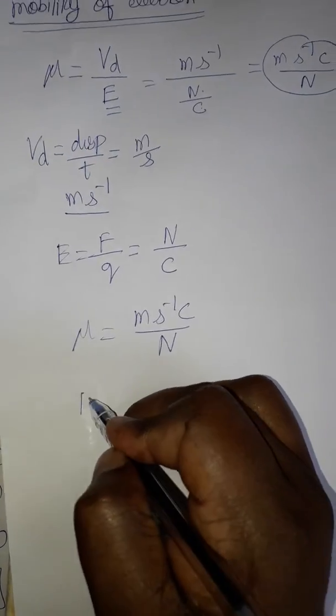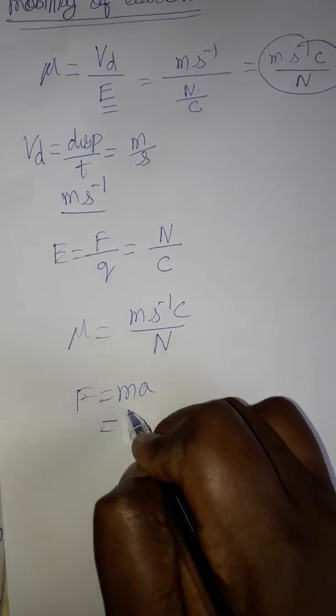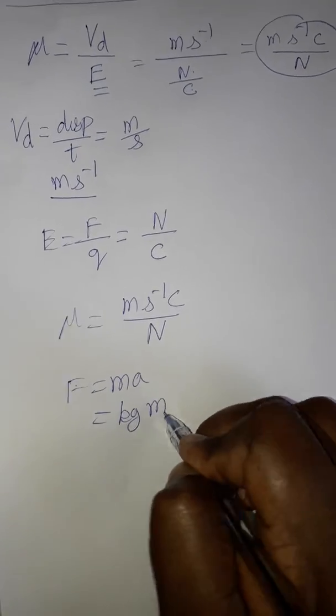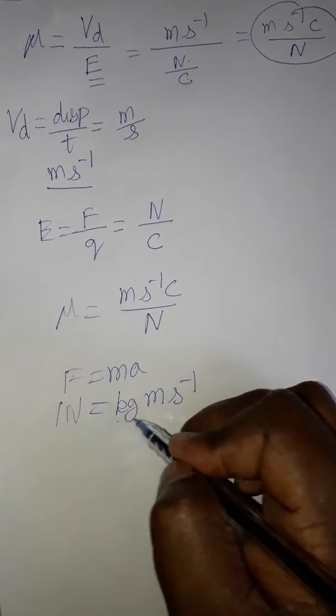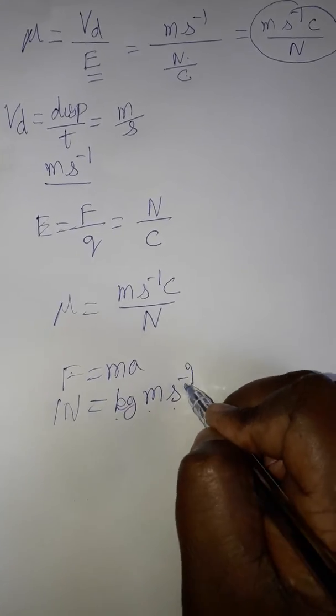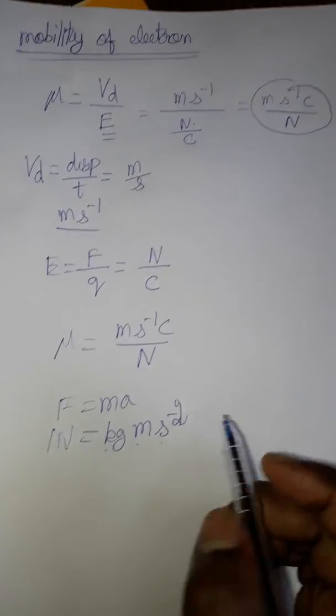One Newton: F is equal to mass into acceleration, kg meter second inverse. One Newton is equal to kg meter second minus 2, because mass into acceleration.